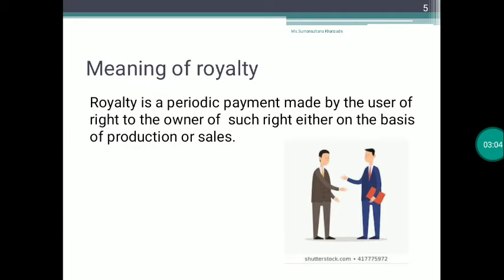Let's look at the meaning. Royalty is a periodic payment made by the user of the right to the owner of such right, either on the basis of production or sales. Periodic payment means a monthly or annual amount paid by the user of the right to the owner of the right.